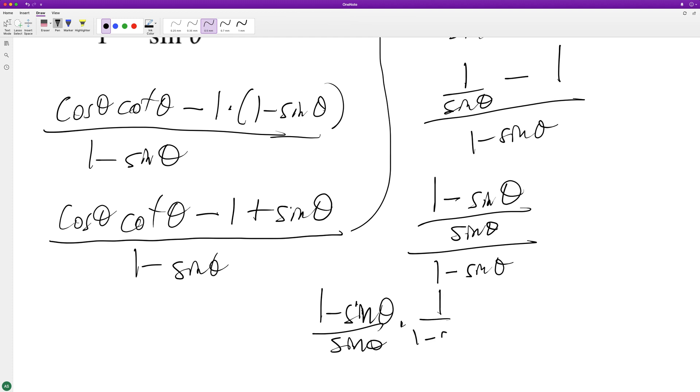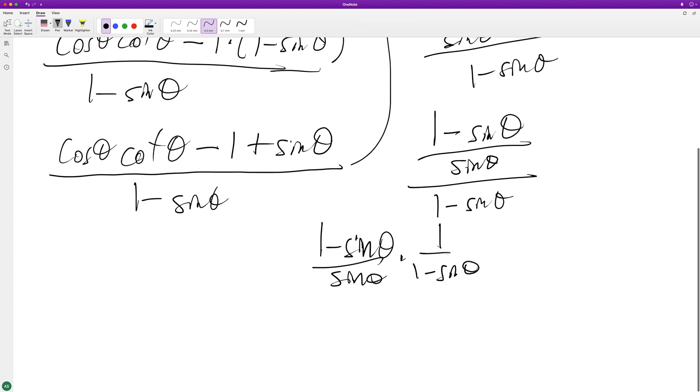Times one over one minus sine theta. It was a cosecant, yeah that's right. So these cancel off and we're left with one over sine theta, which is the same thing as cosecant theta, and that's it.